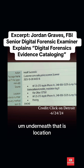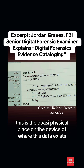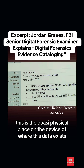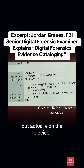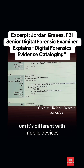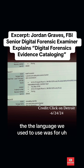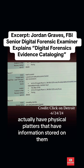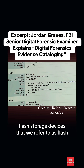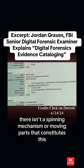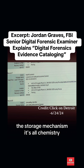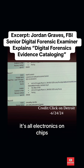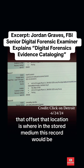Underneath that is location — this is the quasi-physical place on the device where this data exists, not in terms of digital folders, but actually on the device. It's different with mobile devices because with computers we used language for spinning hard drives that have physical platters with information stored on them. With flash storage devices, there isn't a spinning mechanism or moving parts — it's all chemistry, chemical reactions, electronics on chips. That offset location is where in the stored medium this record would be.